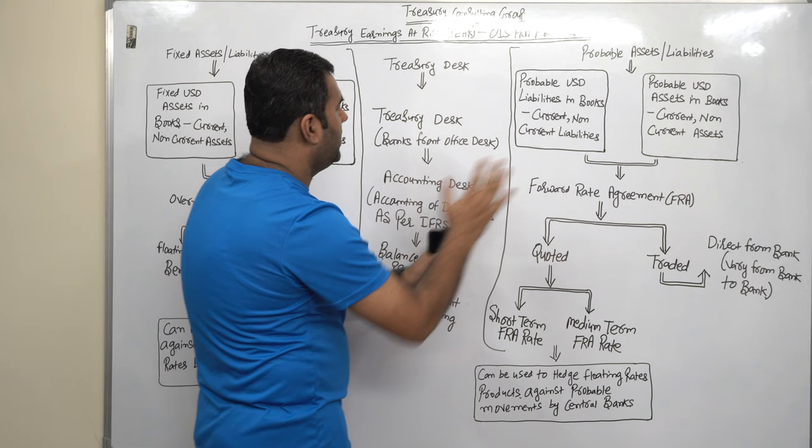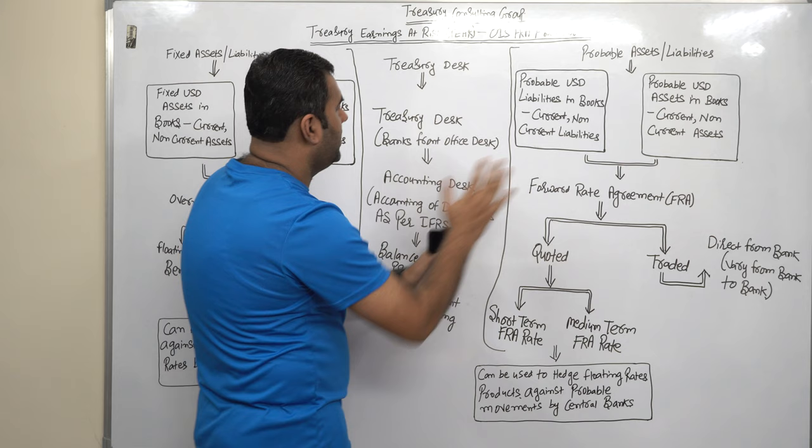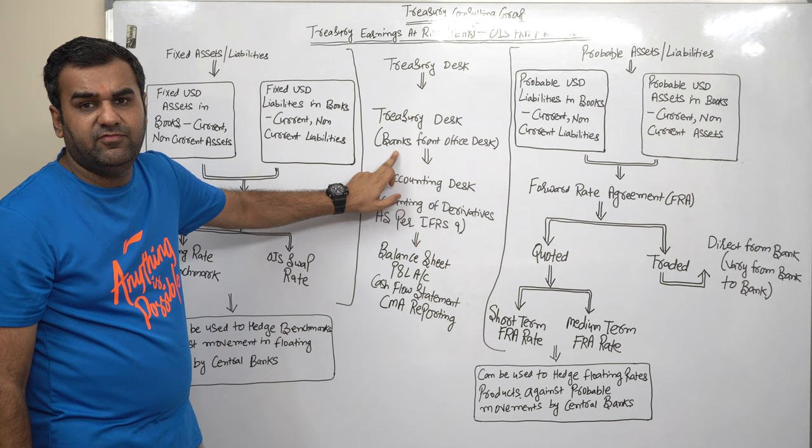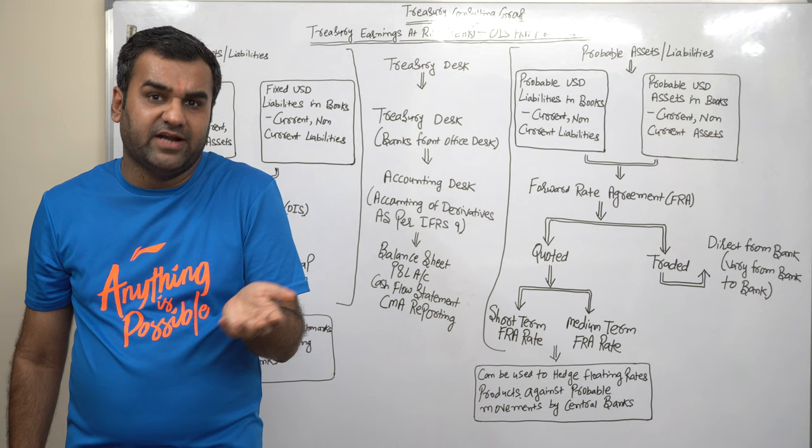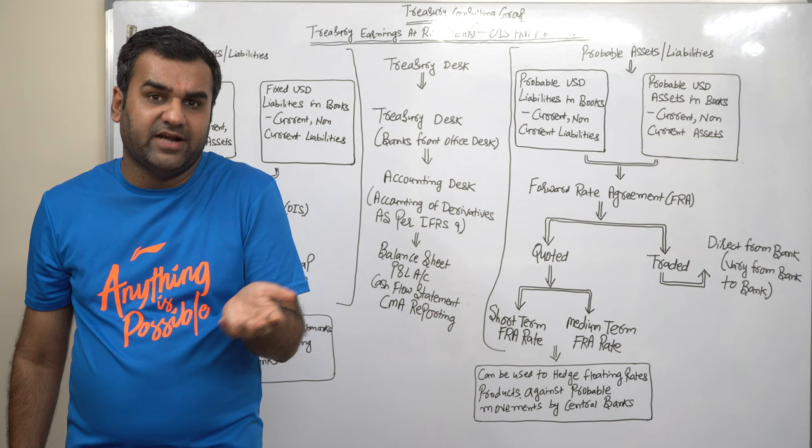We have part 1 here. We have part 2 here. This can only be possible provided you have a Treasury Department who will deal directly with the front office. You need a very dedicated accounting department who understand IFRS 9 accounting of that. In most of the cases, they do not understand IFRS accounting for that. That is another issue.